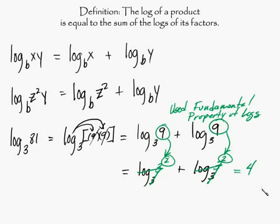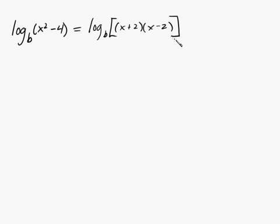All right, so now let's try some other ones. Log base b of x squared minus 4. So this can be written like this. We can factor out x squared minus 4 and we'll get log base b of x plus 2 times x minus 2. And this can be broken up like this: log base b of x plus 2 plus log base b of x minus 2.